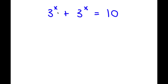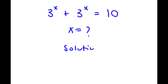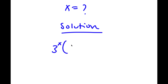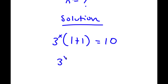In this problem, I have 3 to the power of x plus 3 to the power of x is equal to 10, and I want to find the value of x. I'm going to start by factoring out 3 to the power of x from the left-hand side. So now I have 3 to the power of x times 1 plus 1 is equal to 10. And 1 plus 1 is obviously equal to 2, so I have 3 to the power of x times 2 is equal to 10.